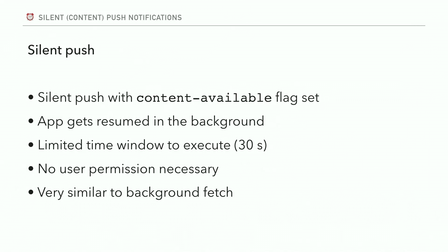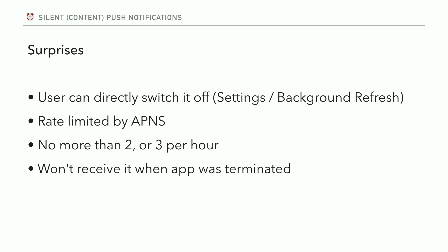Now let's move into the more mysterious parts, starting with silent push notifications. A silent push notification is a push notification that has no sound and has the content-available flag set. It's there to allow you to resume your app in the background to execute some code for a limited time window — about 30 seconds. You don't have to ask for permissions from the user because it's something they don't see. It's very similar to background fetch — the difference is background fetch is scheduled locally from your app, while silent push comes from your server.